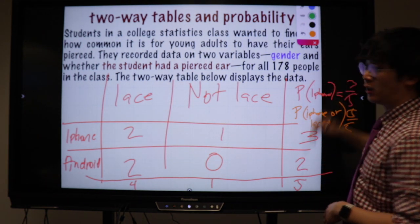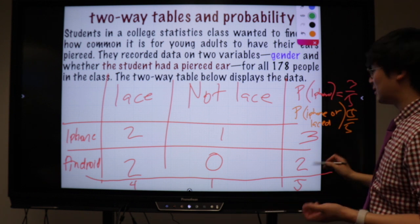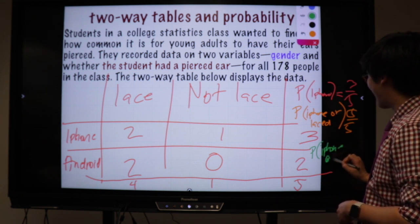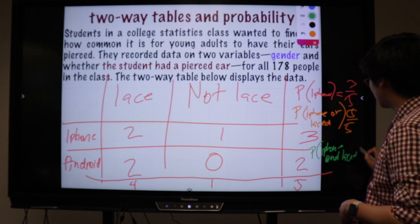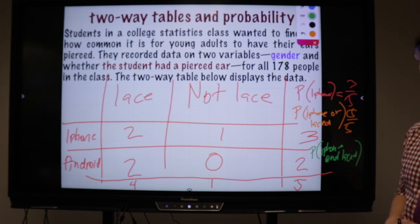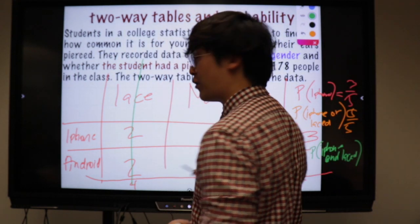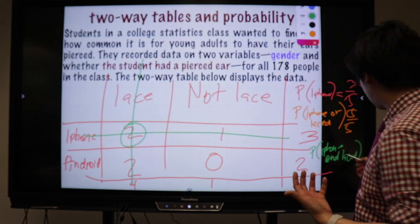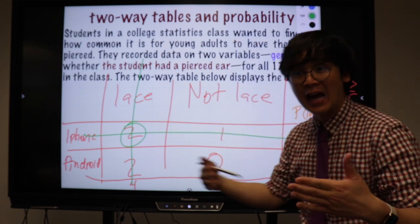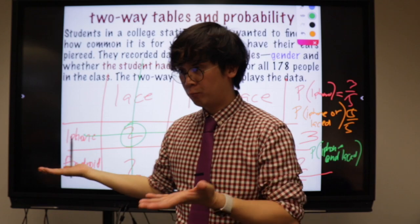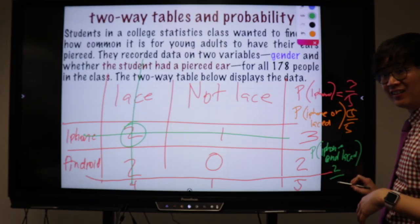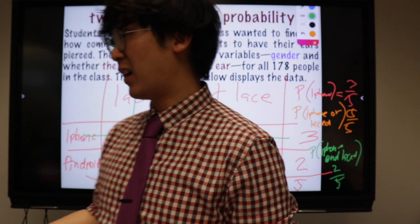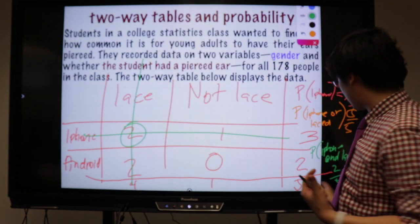This is why you need to know your language in probability and statistics. What's the difference if the question asks for probability of iPhone AND lace shoes versus OR? The AND (intersection) means both conditions must be met — that's 2 out of 5. The AND operation is always a smaller probability than an OR operation.